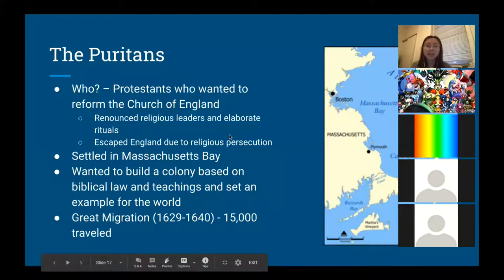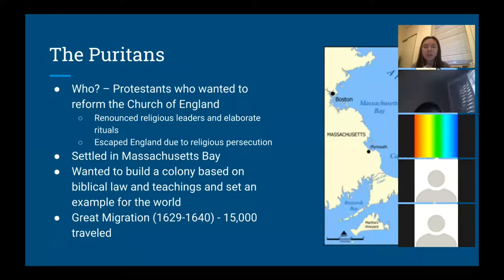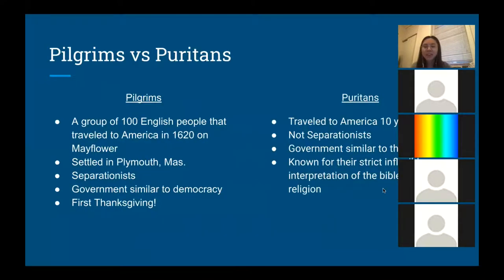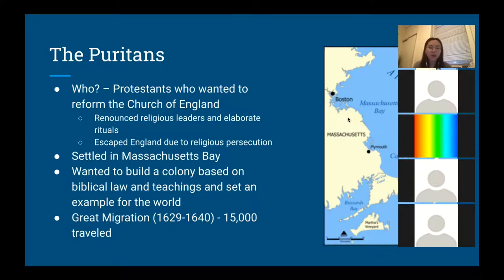Religious persecution meant that many people in England — many Protestants — didn't like the Puritans, so they would hunt them down and inflict violence against them. The Puritans settled in Massachusetts Bay and wanted to build a colony based on biblical law and teachings, essentially setting an example for the world. The Puritans are also said to have caused the Great Migration in Europe, lasting from 1629 to 1640, where 15,000 people from England traveled to the American colonies.